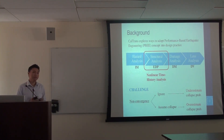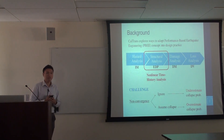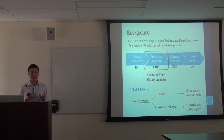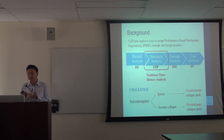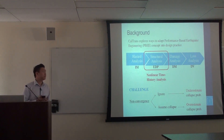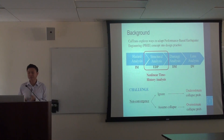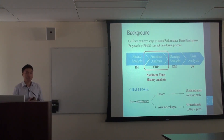The major challenge of this approach is non-convergence in nonlinear time history analysis. On one hand, if we completely ignore those unsuccessful runs, we might have underestimated the collapse probability. On the other hand, if we assume that these runs are associated with physical collapse, then we might have overestimated the collapse probability.